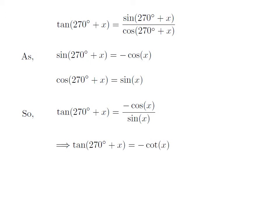As cosine of x divided by sine of x equals cotangent of x, tangent of 270 degrees plus x equals minus cotangent of x.